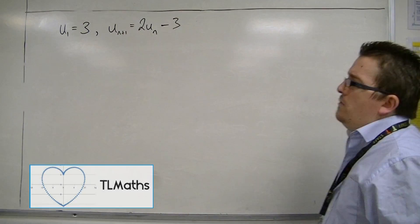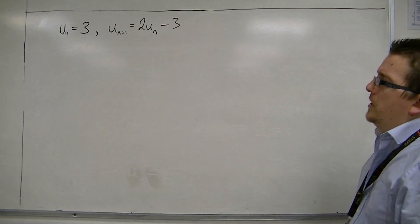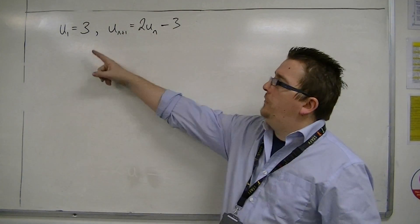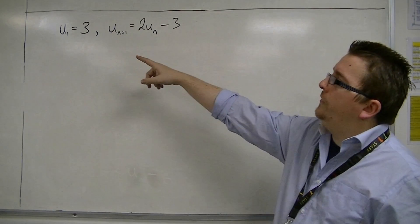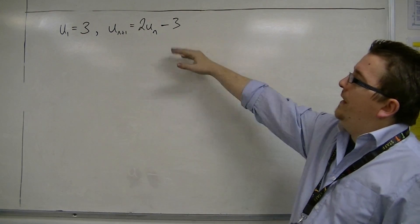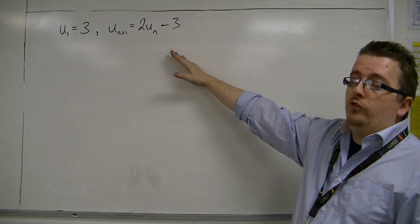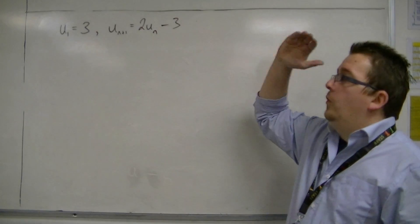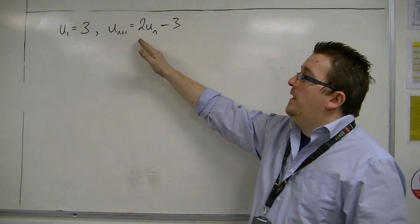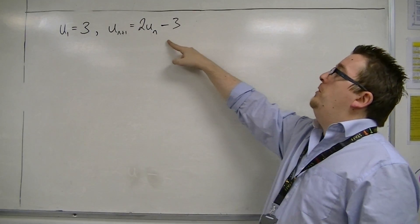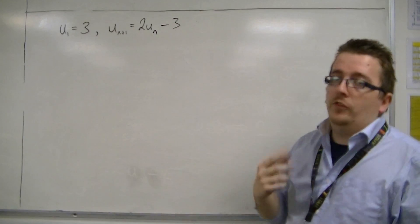Here is an inductive definition. I have the first term: u1 is 3, and I have the recurrence relation — the way to get to the next term — un+1 is 2un minus 3.